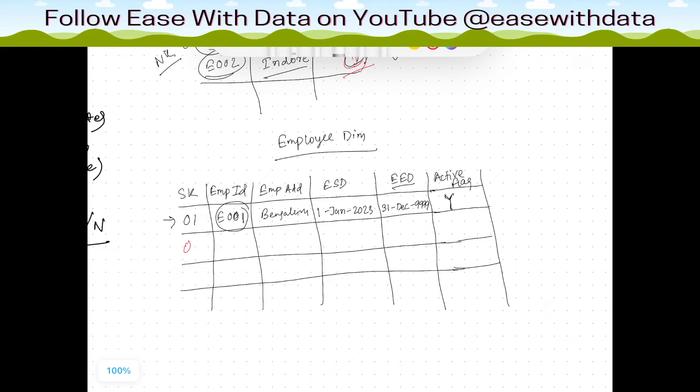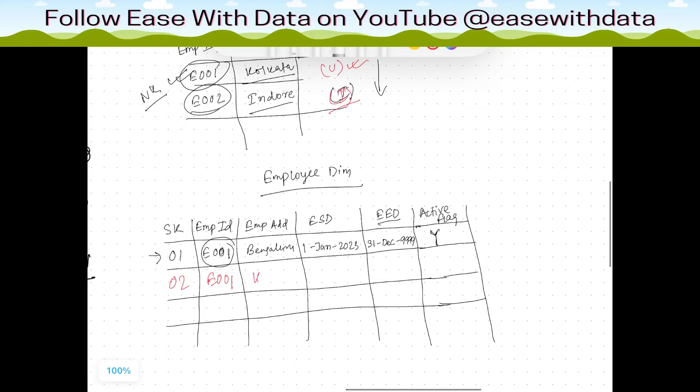What happens in this case is we will have a 002 here. We will insert this new record again for that same employee. The location is changed to Kolkata. Now when we are loading data, consider this load is happening on 10th Jan. In that case, the effective start date will be 10th Jan 2023 and our end high date would be 31st December 9999 because this is now the active record and the current flag will be Y.